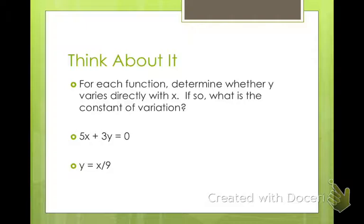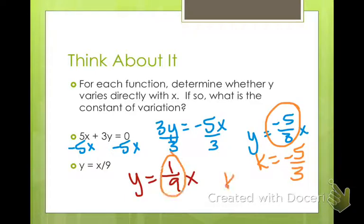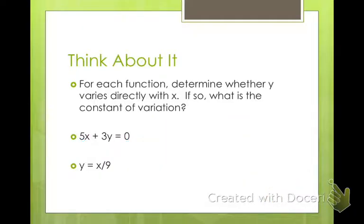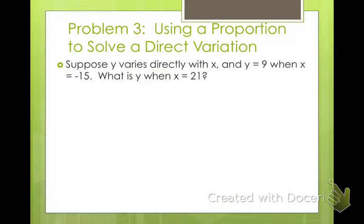Okay, I want you to go ahead and pause. See if you can figure out whether or not these are direct variations, and what our constant of variation would be. For these, I just went ahead and rewrote them as y equals, and got it as a term, and then x. So the first one, y equals negative 5 thirds x, or k, our constant variation is negative 5 thirds. And the second one, same thing, k equals 1 ninth.